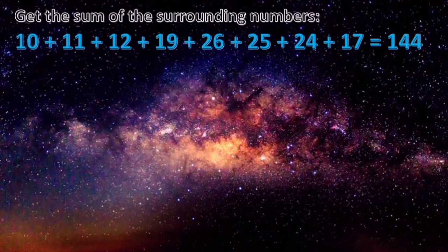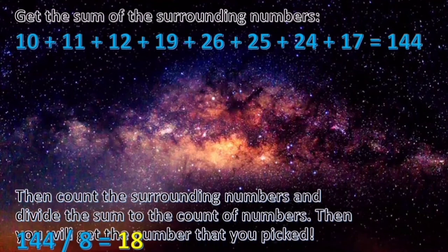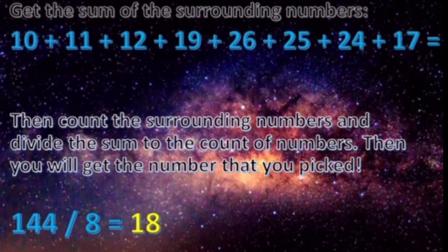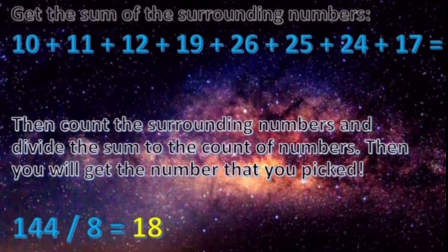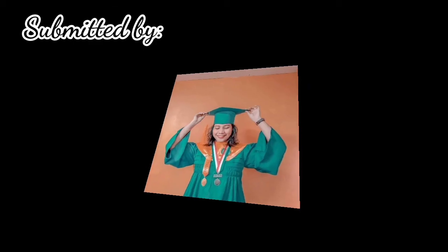Go get the sum of the surrounding numbers. 10 plus 11, plus 12, plus 19, plus 26, plus 25, plus 24, plus 17 is equal to 144. Then count the surrounding numbers and divide the sum to the count of numbers. In short, the average. Then you will get the number that you picked. Oh my god! Wow! Hope you enjoyed.